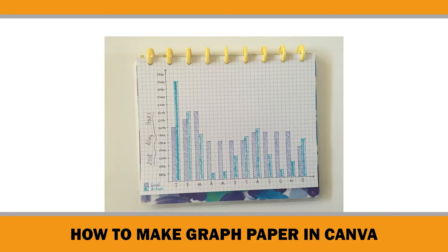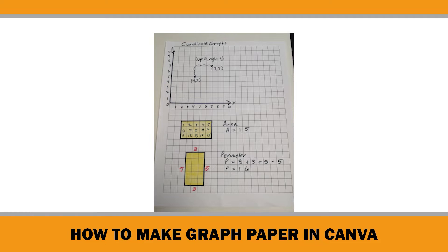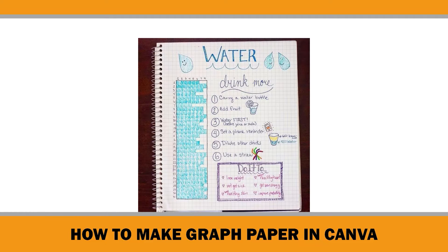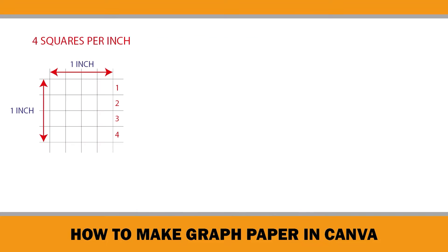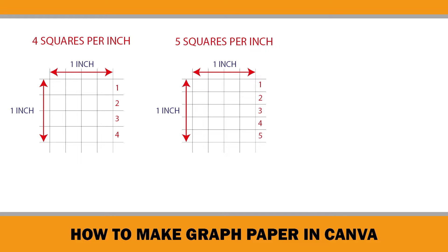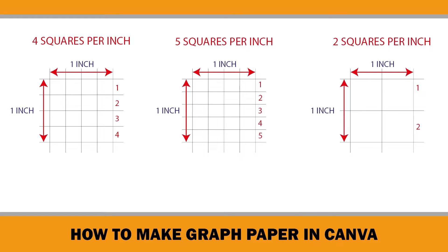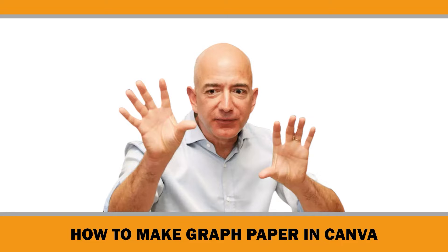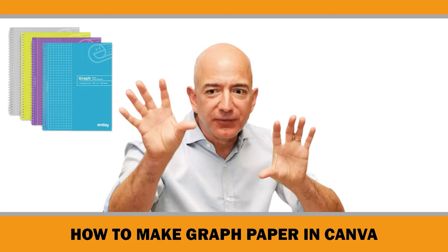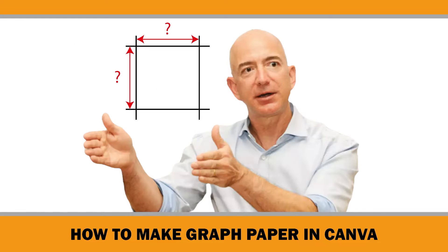Since graph paper is used to create graphs, charts, and other visual representations of data, there are some industry standards like 4 squares per inch, 5 squares per inch, or 2 squares per inch. Therefore, if you want to call your low-content book a real graph paper notebook to sell on Amazon, you have to care about the scale of the grids to accommodate different customer needs.